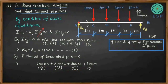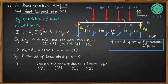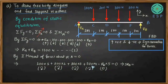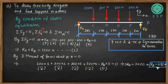Simplifying the moment equation: 5·RB = 100×1 + 200×2 + 300×3 + 500×4 = 100 + 400 + 900 + 2000 = 3400. Therefore RB = 3400/5 = 680 newtons. We have found the value of RB as 680 newtons.